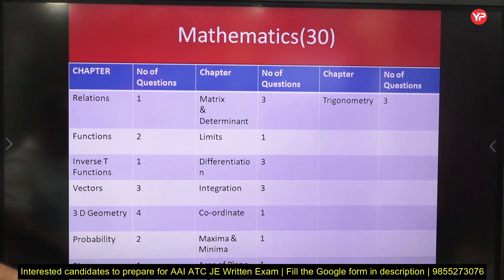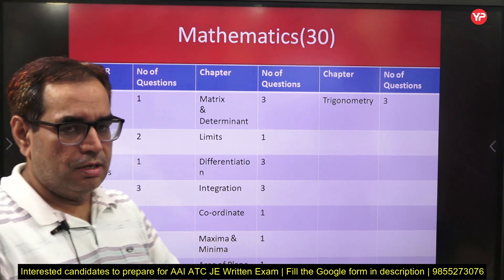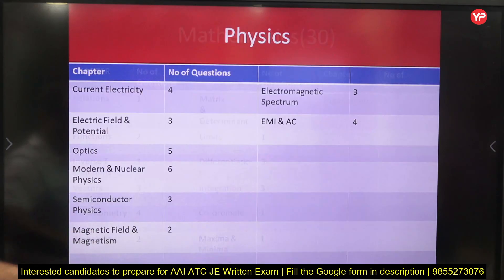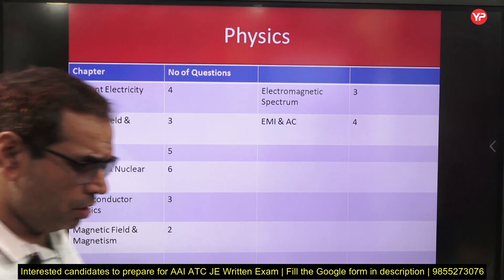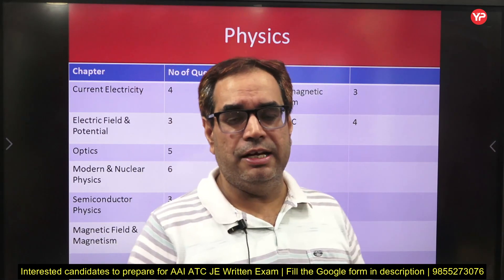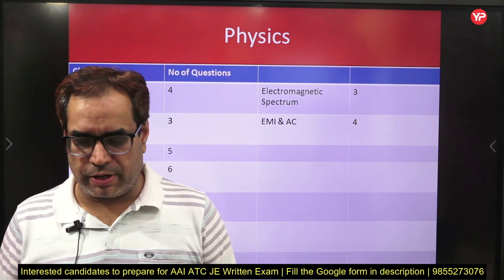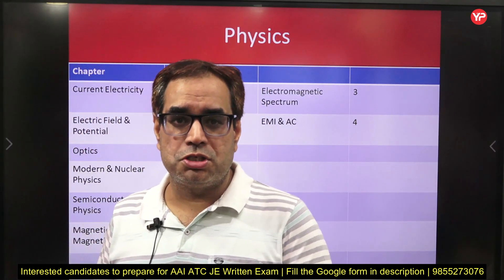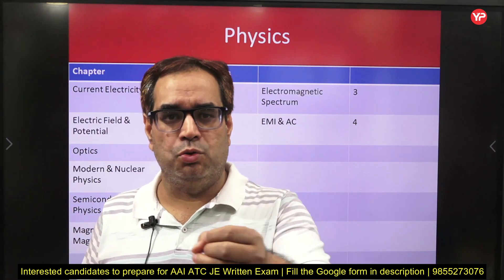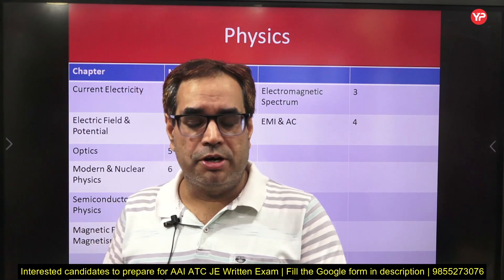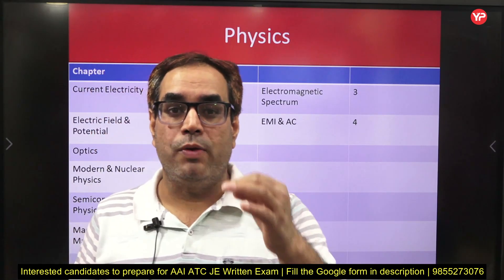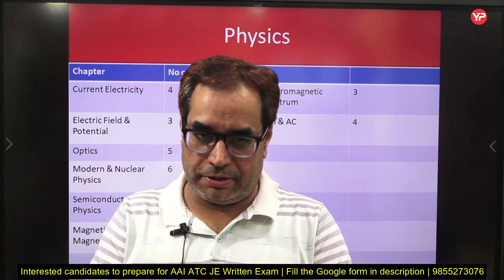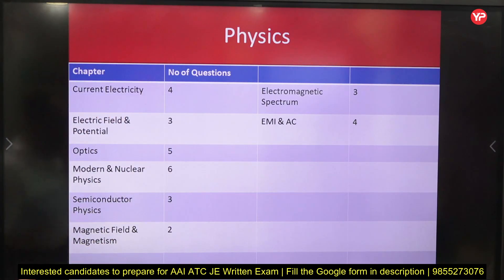Now moving to the Physics section — there are 30 questions, and they are mixed with math questions in the paper. In physics, both 11th and 12th class are studied, but from last some years they are not asking many questions from 11th physics — only one to three maximum. The majority of physics questions come from 12th standard, so you have to focus more on 12th standard physics.